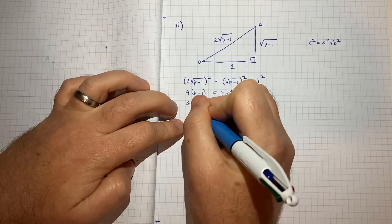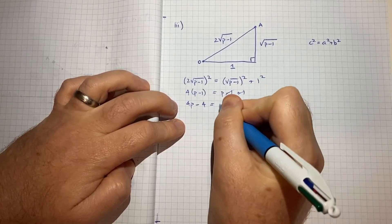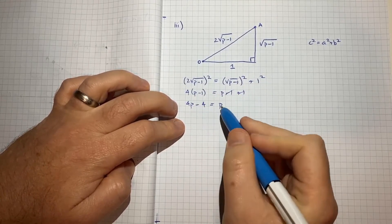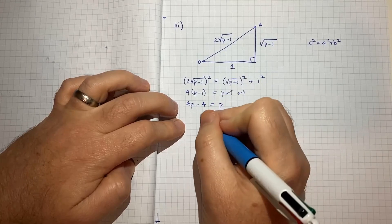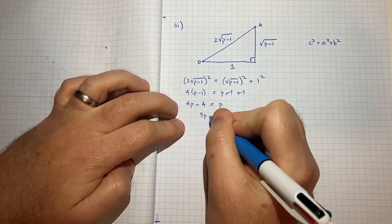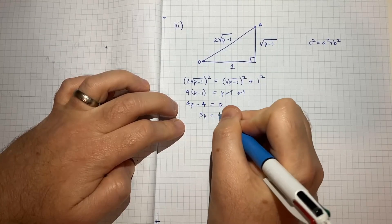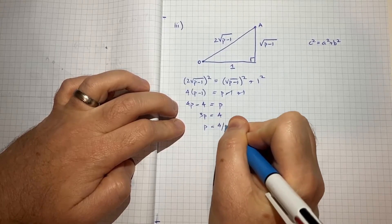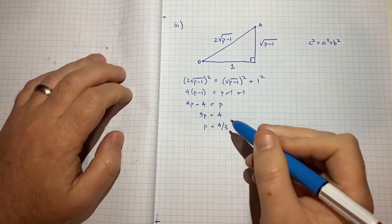So we get 4P minus 4 is equal to P. Let's just do some rearranging. 3P is equal to 4. So P is equal to 4 on 3. So that's part 1. We've got P.